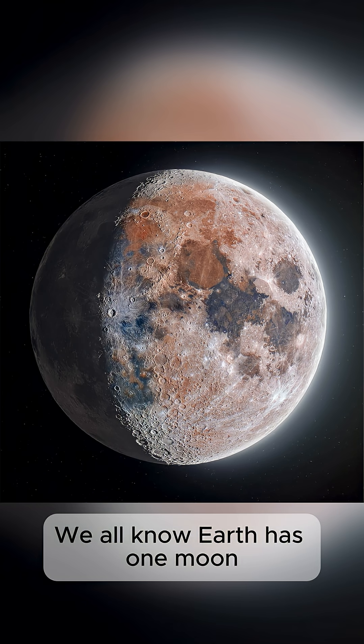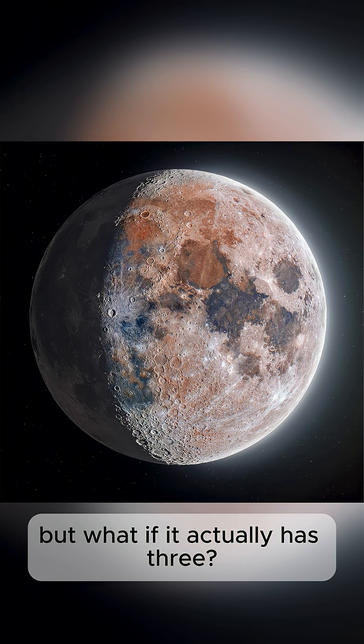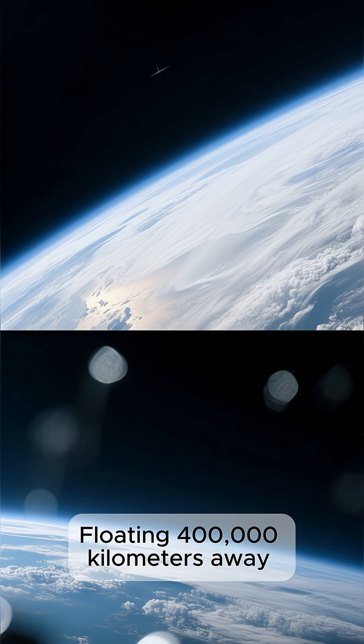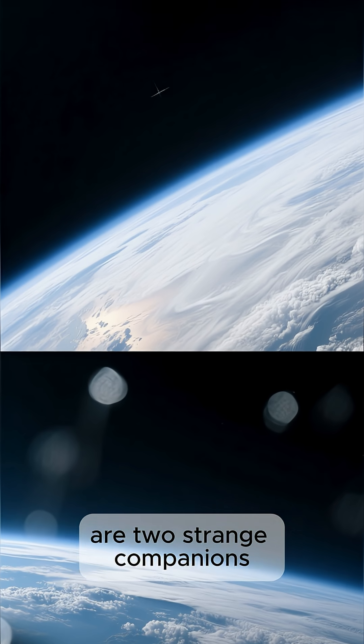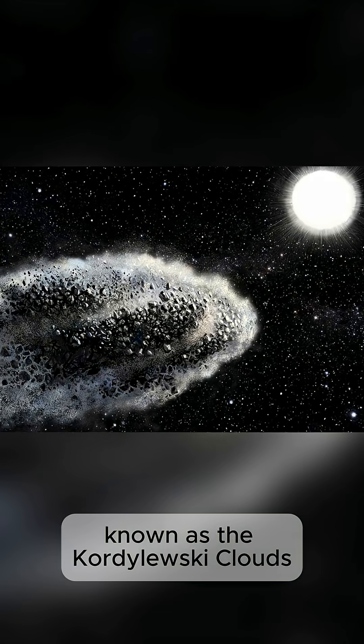We all know Earth has one moon, but what if it actually has three? Floating 400,000 kilometers away are two strange companions, known as the Kordolewski clouds.